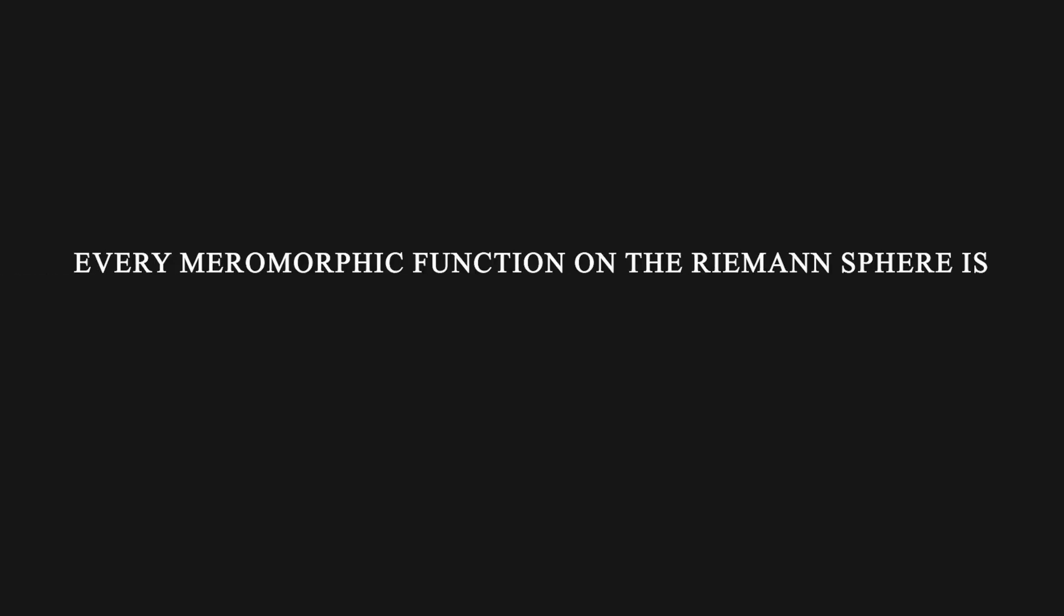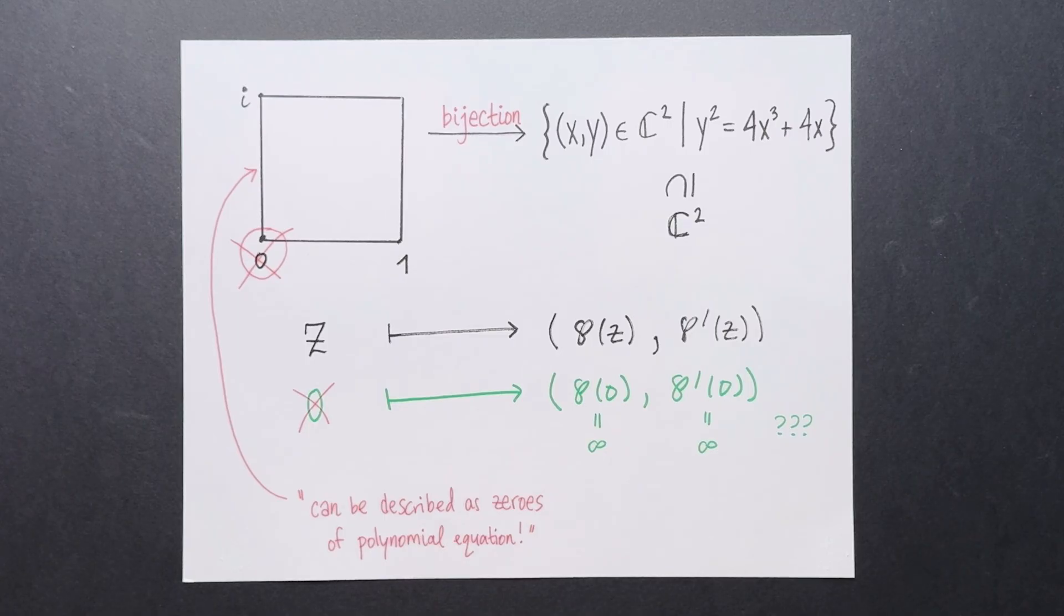For the Riemann sphere, every meromorphic function on it is rational. For the complex torus, you can isomorphically map it to the zero set of a polynomial equation. So is it true that every Riemann surface can be isomorphically mapped to the zero set of an algebraic equation?